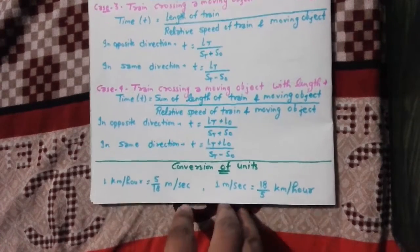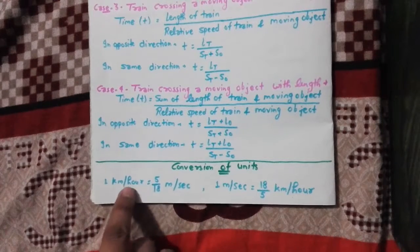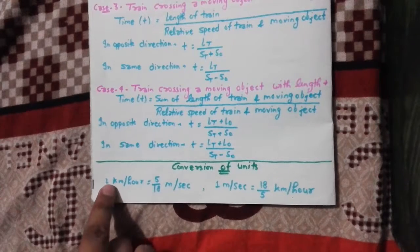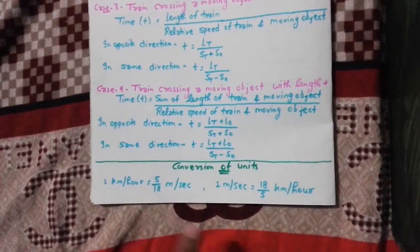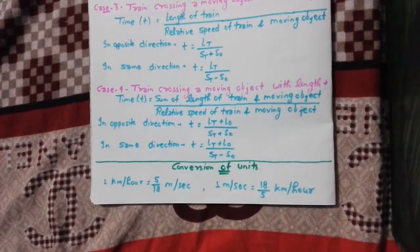Now conversion of units. One kilometer per hour is equal to 5 upon 18 meter per second. So this is how possible to do. One thousand upon 3600, if you simplify and cut it, 5 by 18. And one meter per second equals 18 by 5 kilometers per hour.